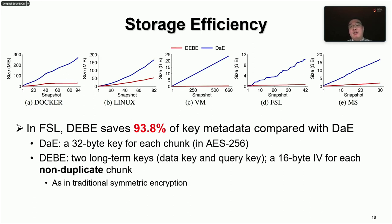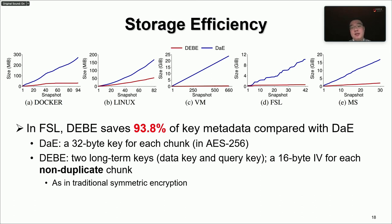Here we compare the key metadata overhead of DBE with DAE to show DBE's benefit in storage efficiency. DAE needs to maintain a key for each ciphertext chunk before deduplication. While DBE maintains two long-term keys as well as a random IV for each non-duplicate ciphertext chunk after deduplication, as in traditional symmetric encryption. We measure key metadata overhead as the size of all keys and IVs used in encryption. The figure shows that for DAE, the key metadata size increases linearly with the number of stored snapshots since DAE manages per-chunk keys. In contrast, DBE significantly reduces key metadata size, storing only an IV for each non-duplicate ciphertext chunk. For example, in the FSL dataset, DBE saves around 93% of key metadata compared with DAE.